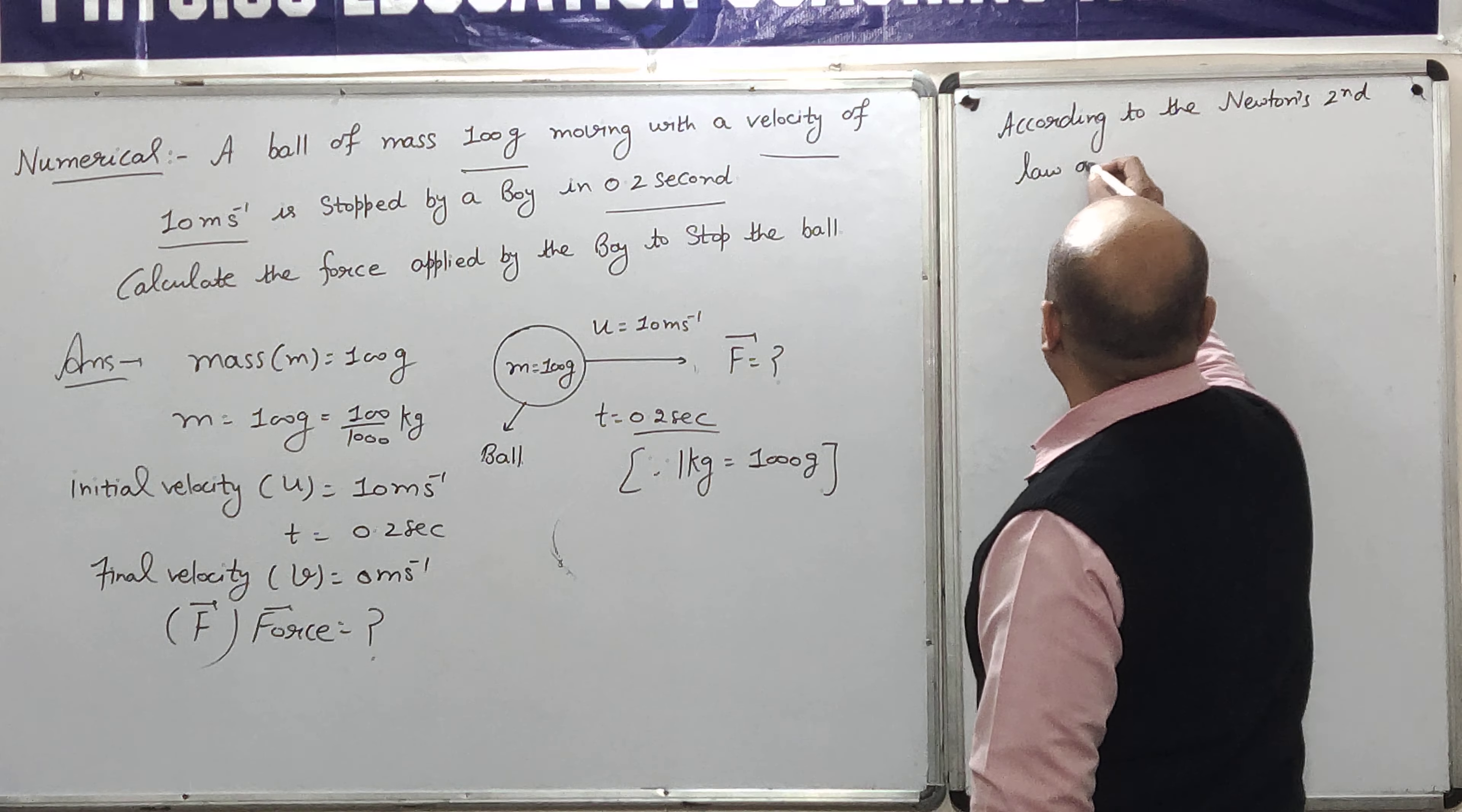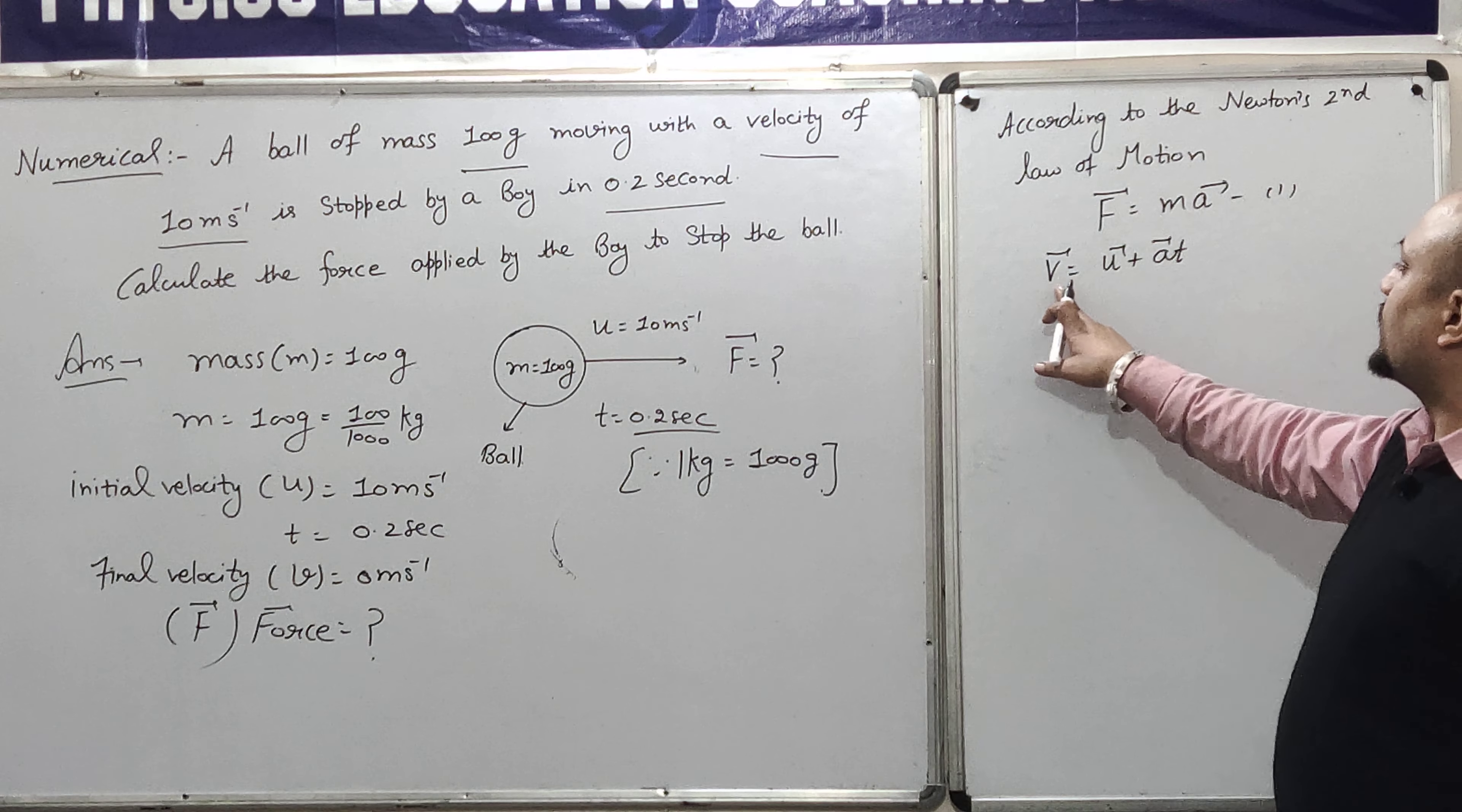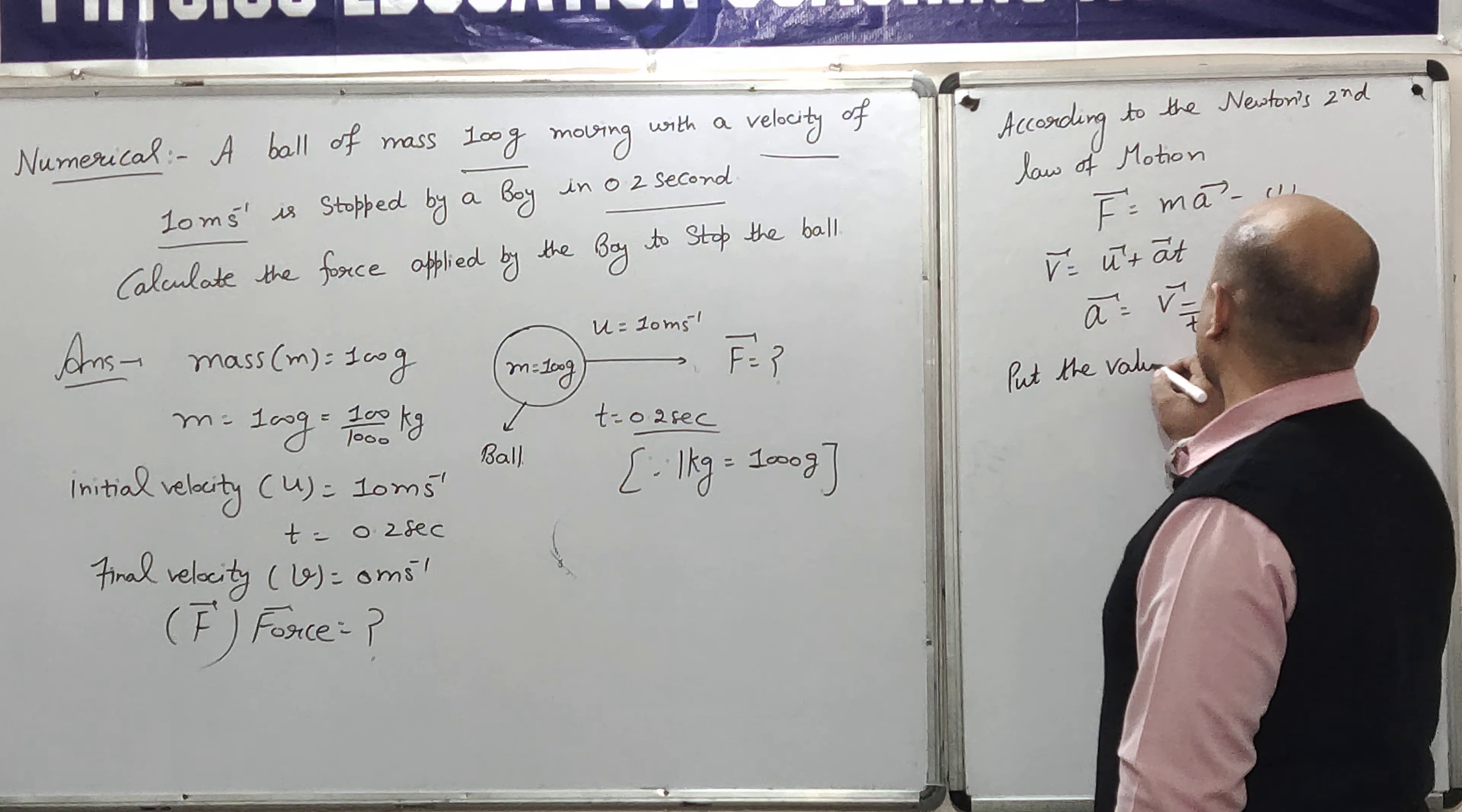Newtons second law of motion. If we talk about it, what is F? That is mass into acceleration. This is equation number 1. Now how do we know the acceleration? You know that V is equal to U plus A T. Now what is V? That is the final velocity. What is U? That is the initial velocity. What is A? That is the acceleration. So acceleration ki value निकाल है. V minus U upon T. Put the value of A in equation number 1. So F comes out to be mass into acceleration. What is acceleration? V minus U by T. So force निकाल है.